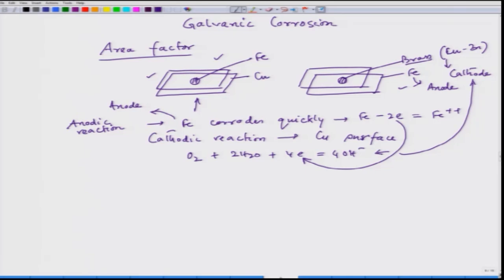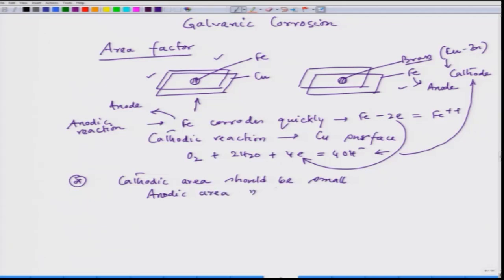So the loosening effect would be hindered. From this idea, it is very clear that in order to design some joining material, we have to make sure that the cathodic area should be small and the anodic area should be large. In that case, the galvanic effect would be felt less severely. This is a very important factor, and we would talk about this area effect when we talk about intergranular corrosion — there also the area effect would be severely felt.